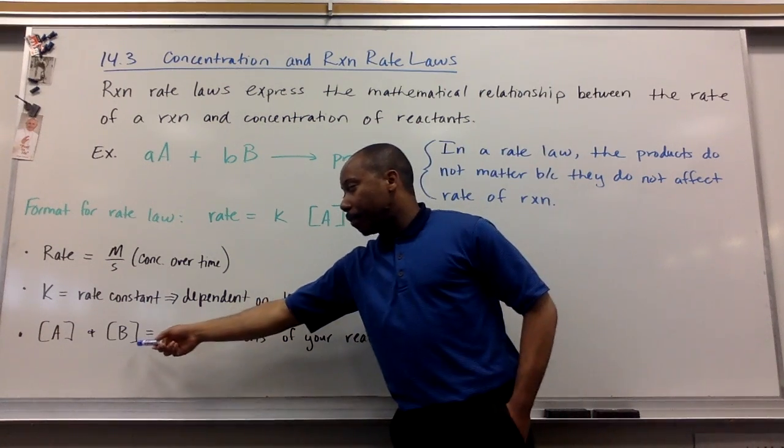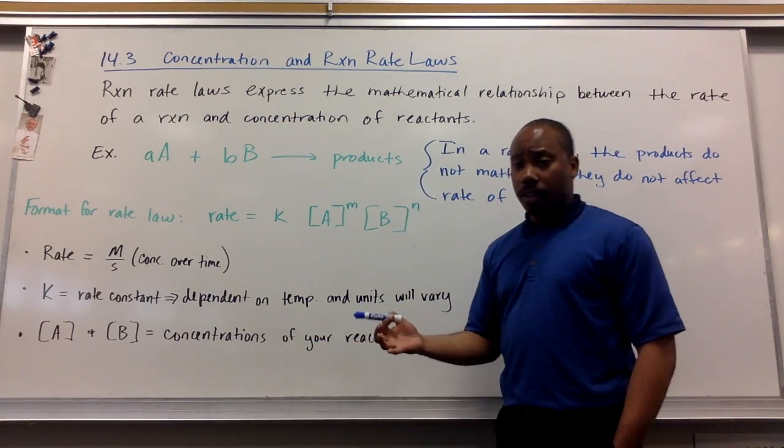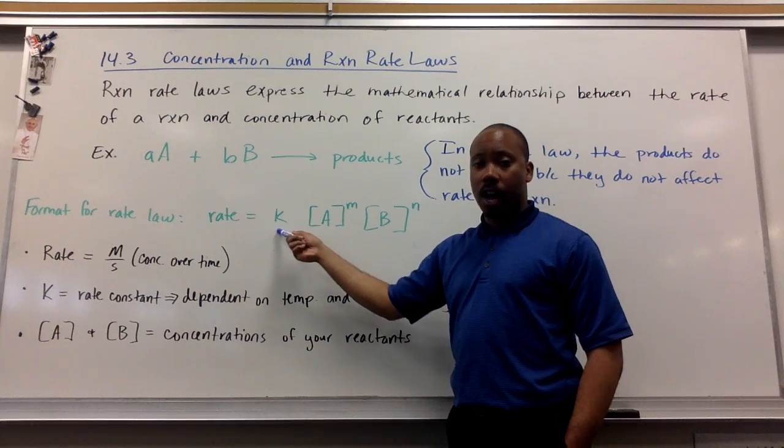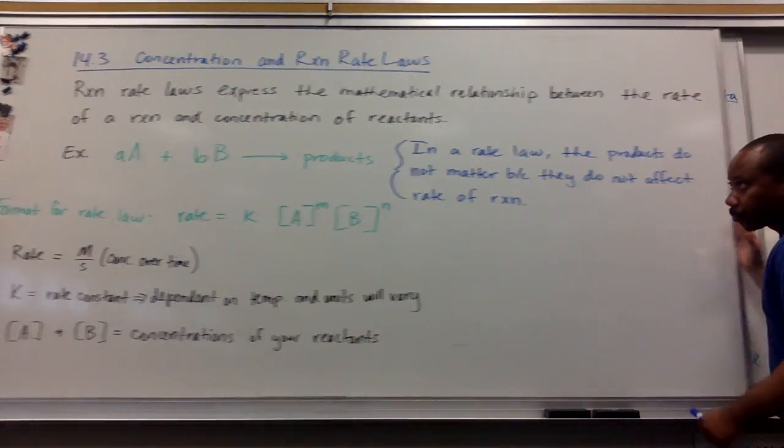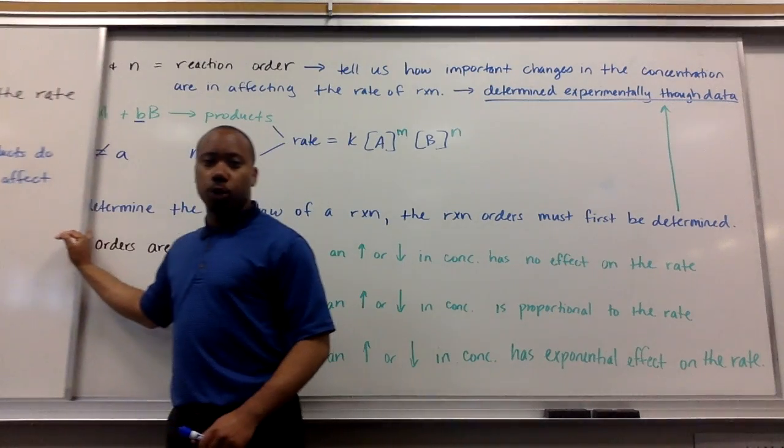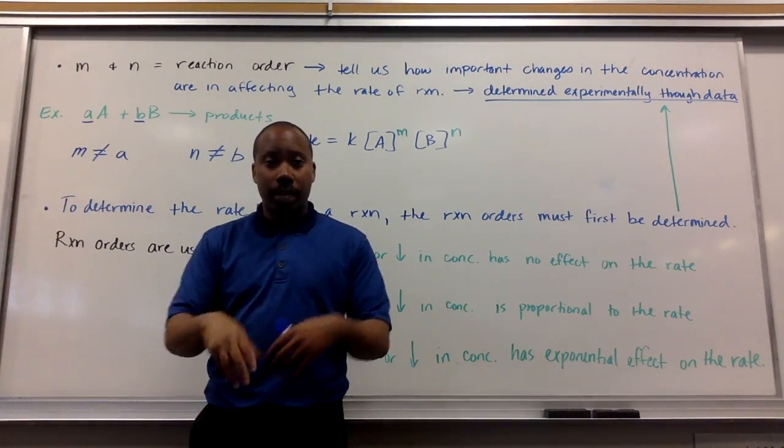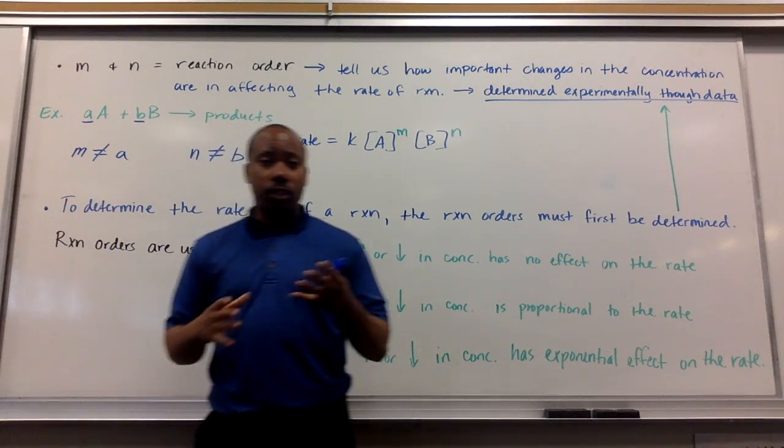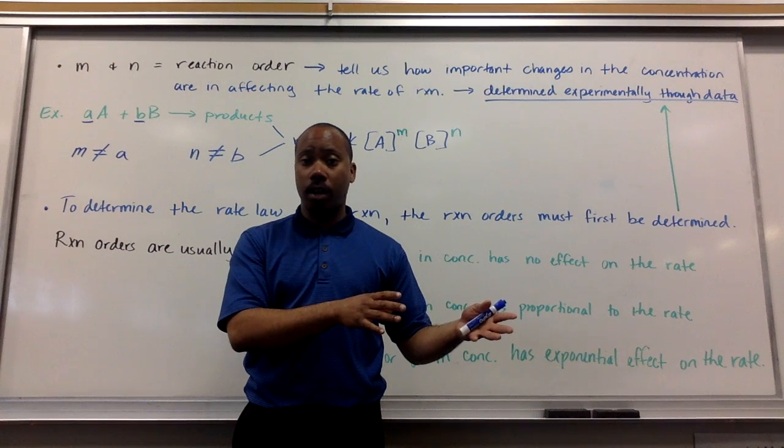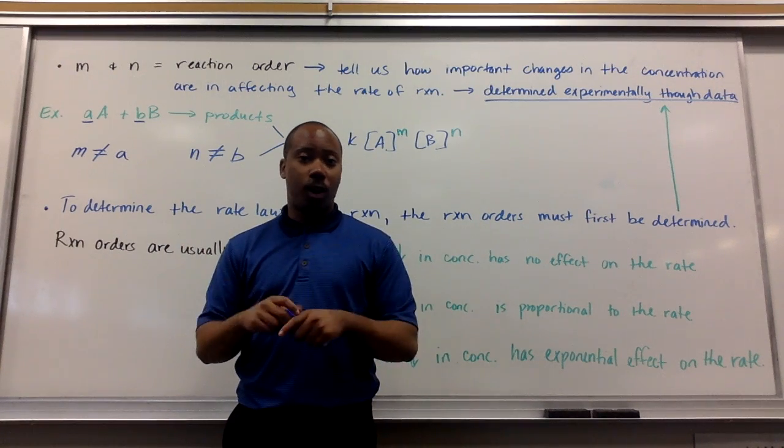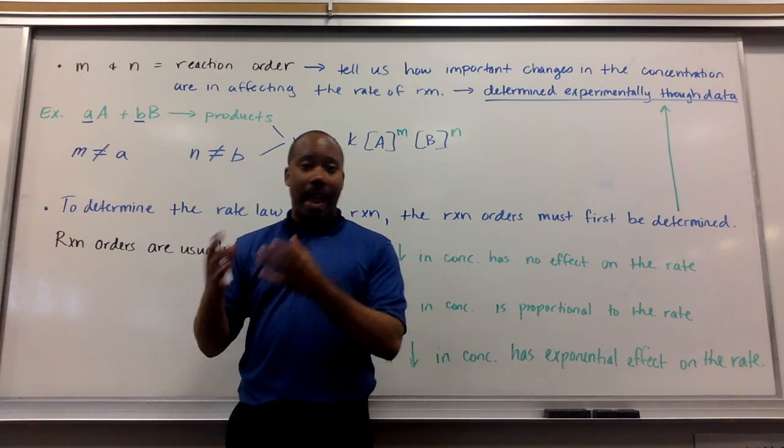And A and B, these are the concentrations of your reactants. Now, what's new here besides just the rate constant is M and N. Let's talk about what those are. M and N are called your reaction orders. M is a reaction order. N is a reaction order. These are just arbitrary letters assigned to some integers you're going to be putting in these spots later on. You could have called it P and Z. It doesn't really matter. The variables chosen were M and N.